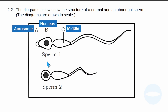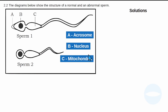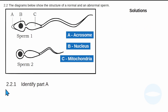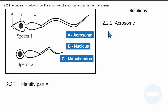Now let's get to the questions. For question 2.2.1 — identify part A — the answer is acrosome. It is the structure responsible for penetrating the ovum during fertilization.